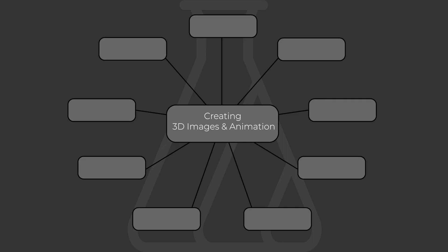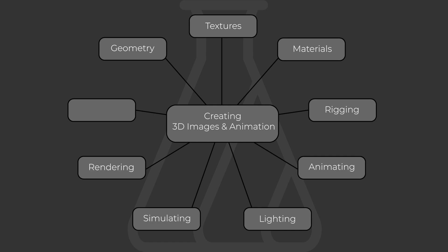The start-to-finish process of creating 3D imagery and animation involves a number of different types of tasks and processes. A typical 3D project may involve creating models, so building geometry, applying textures and materials to the surfaces of these models, possibly rigging those models, animating them, lighting the scenes, simulating effects such as fire, smoke or water, then rendering the scenes and then compositing and post-processing those rendered images. Each of these processes requires a different kind of toolset and workflow, and all 3D software has its own way of compartmentalizing these different tasks, and Houdini uses what it calls contexts.